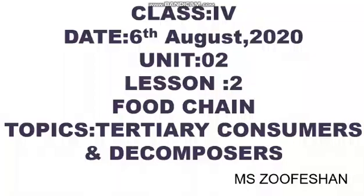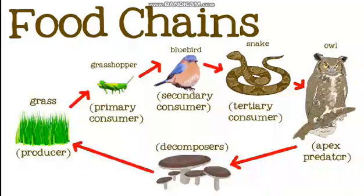Students, we discussed about the food chain and how it's a pathway from which energy is transferred from one organism to another, starting from the sun to the plants that are producers, then to the primary consumers that are herbivores, then to the secondary consumer that can be omnivores or carnivores who just eat meat. From the secondary consumer it passed to the tertiary consumer.